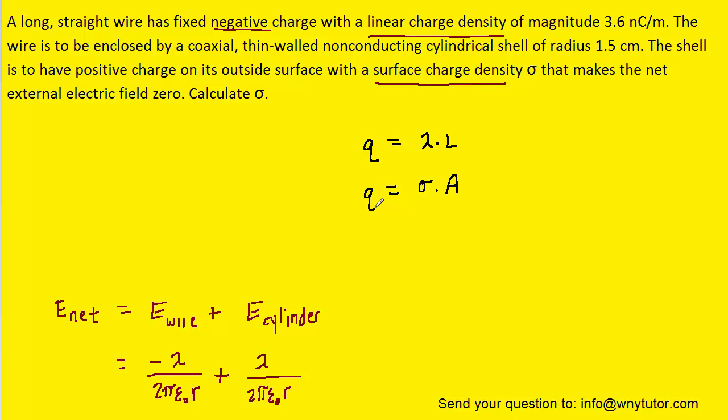But it also turns out that the amount of charge can equal the surface charge density multiplied by area. Surface charge density has a unit of coulombs per meter squared. Area has a unit of meters squared. Once again those units would cancel giving us a unit of coulombs to represent the total charge. Now the surface area of a cylinder is represented by 2πr multiplied by its length. So we can substitute that expression in for the area.